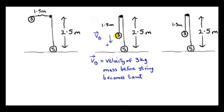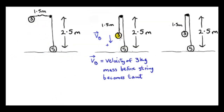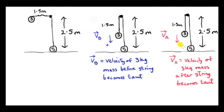Here is the picture. Just before the string becomes taut, let VB be the velocity of the 3 kg mass, taking downwards as positive. At this instant the string is slack — technically not yet taut. We want to show that when the string becomes taut, the speed of each particle is √(3g/8). That result is VA, the velocity of the 3 kg mass after the string becomes taut, and VA and VB are different.